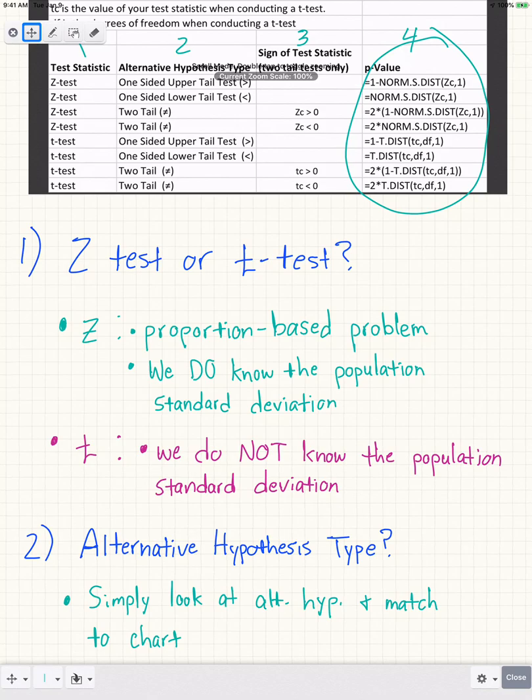If it says less than, that means it's a one-sided lower-tail test. If it's two-tailed, the alternative hypothesis will say 'not equal to,' and you jump straight into those two-tailed considerations.